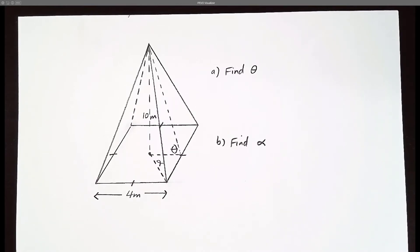Let's use SOH CAH TOA to find theta and alpha in this square base pyramid. So right off the bat, let's focus on theta.